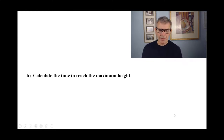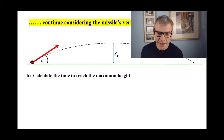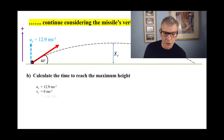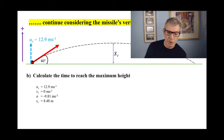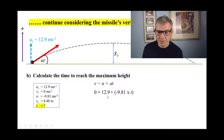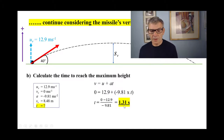Part B: calculate the time to reach the maximum height. We continue considering the missile's vertical motion only. Initial vertical velocity is 12.9 m/s, taking upwards as positive. At maximum height, v = 0. Acceleration is −9.81 m/s². We use v = u + at, substitute the numbers in — remembering the −9.81 — and rearranging for t gives t = 1.31 seconds.